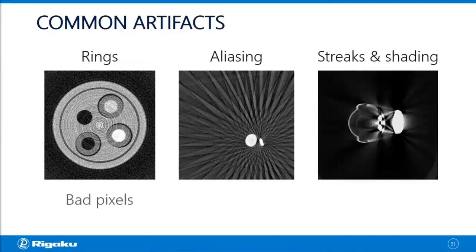Rings usually come from bad pixels or non-uniformity of the detector, and this one is easily correctable. Aliasing comes from under-sampling.